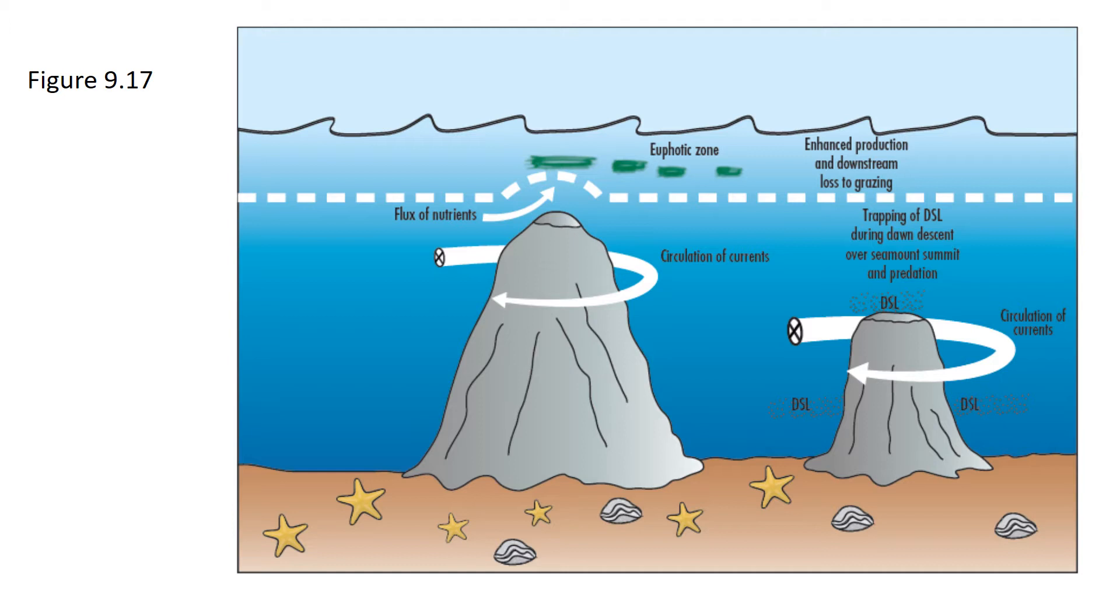Figure 9.17 shows a schematic of seamounts and how they affect biology and oceanographic processes in their vicinity. Seamounts rise from the deep sea and provide a large and substantive obstruction to the flow of water around the seamount.